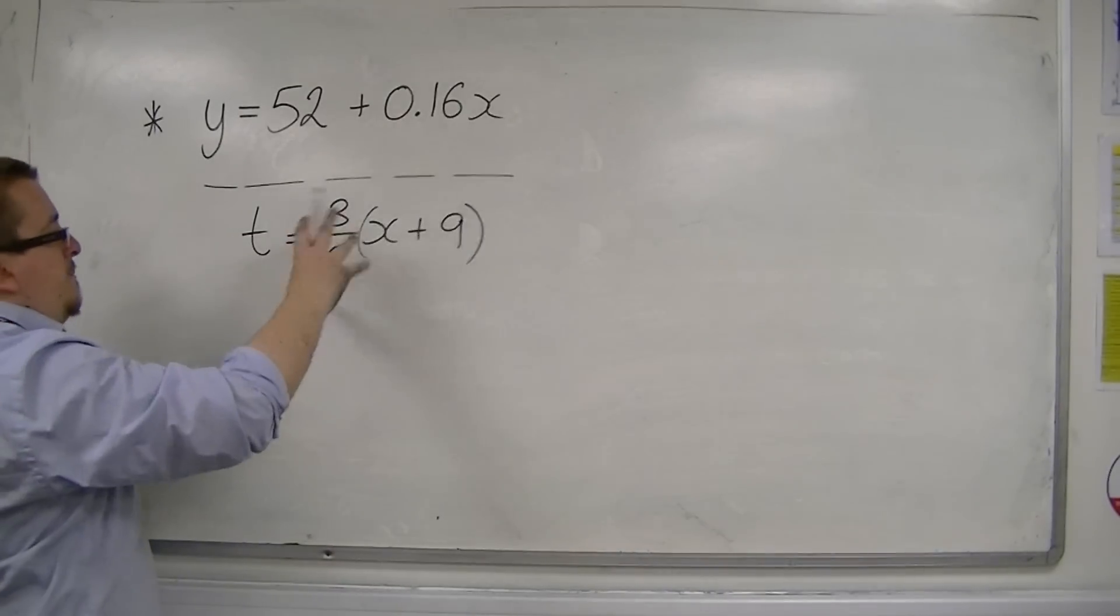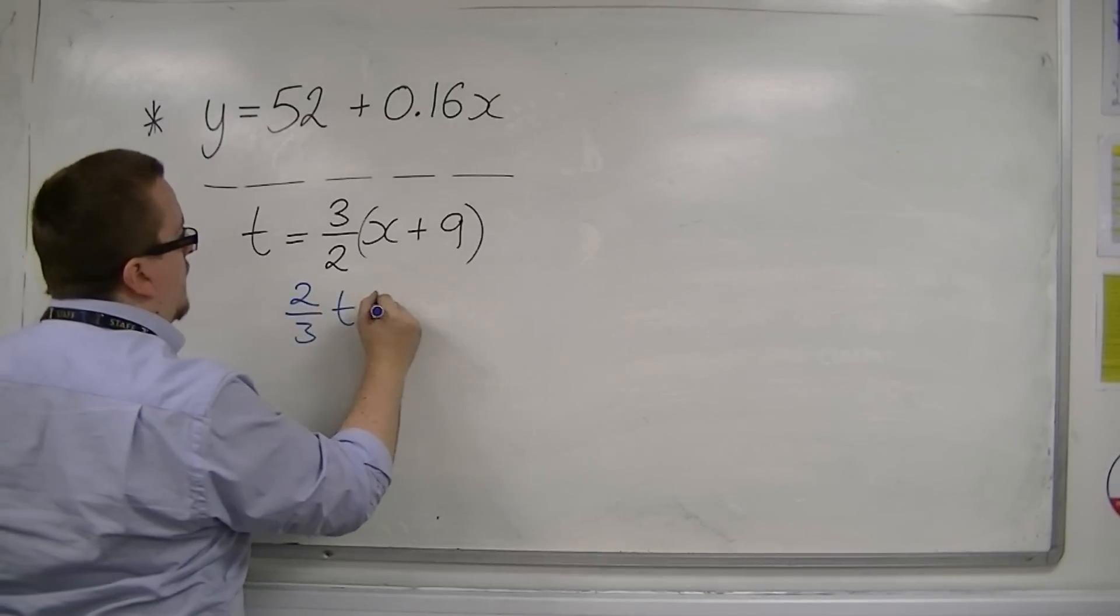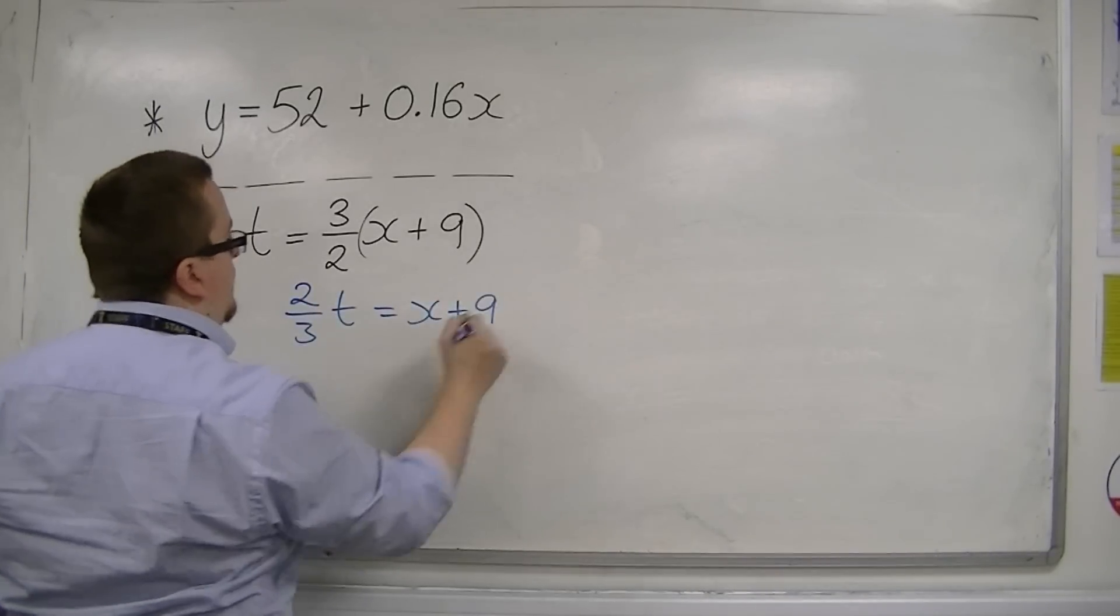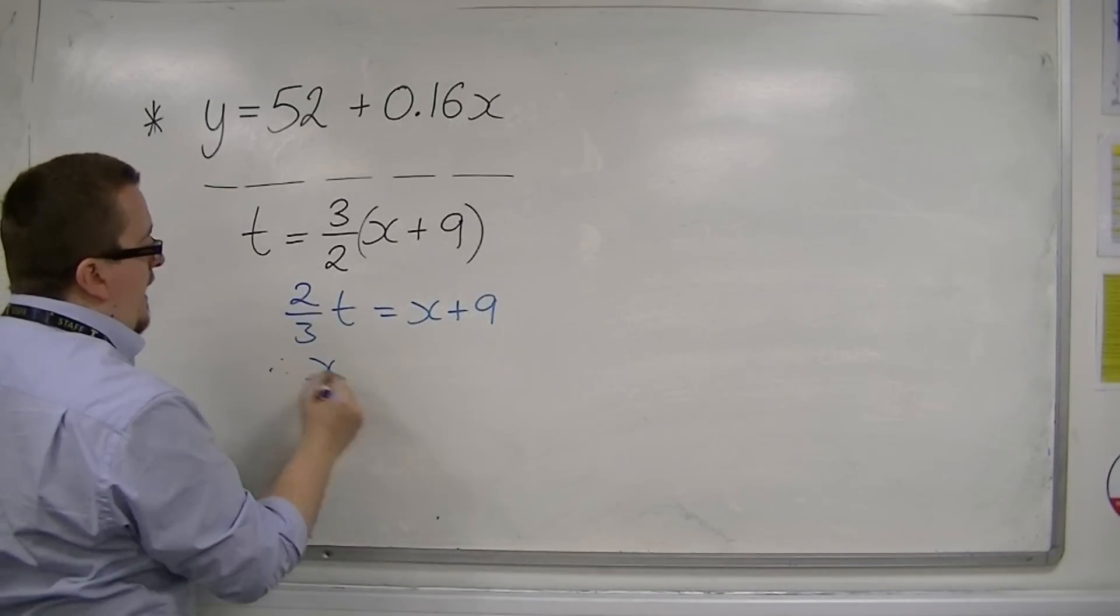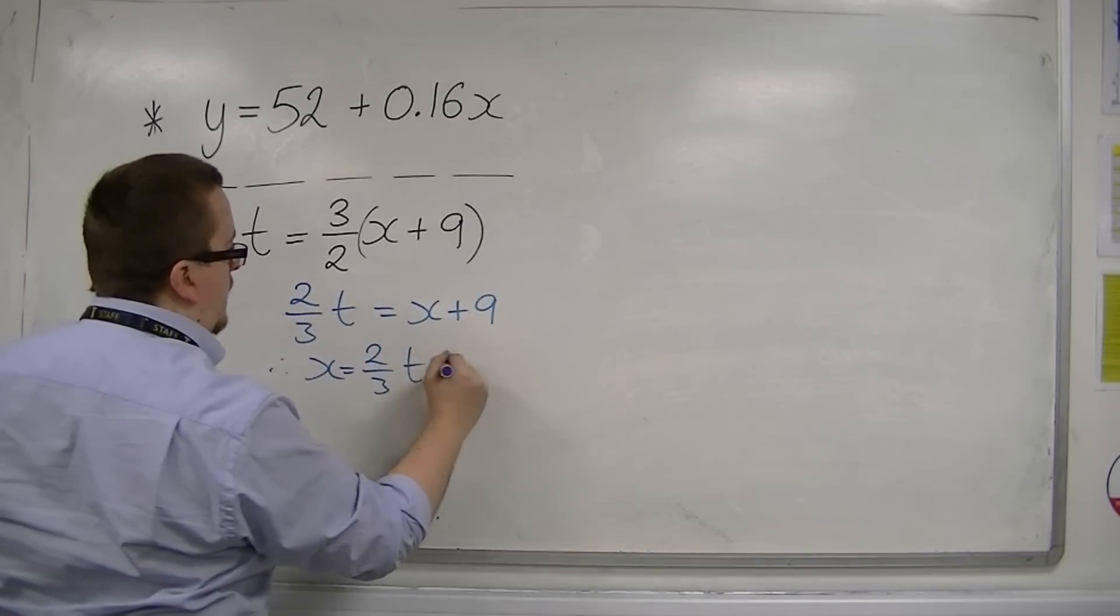So if we divide both sides by three halves, we'd get two thirds t is equal to x plus 9. So x will be equal to two thirds t minus 9.